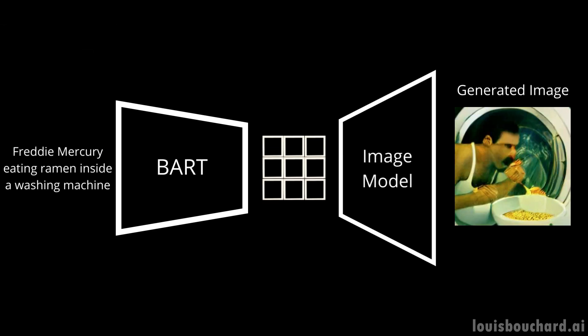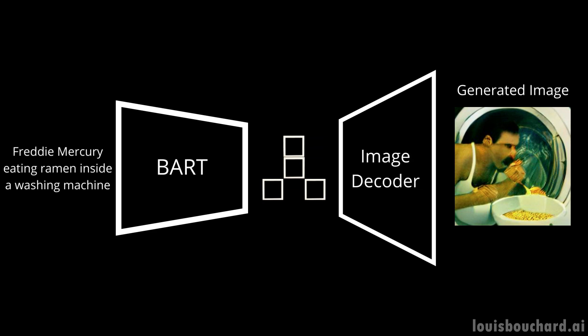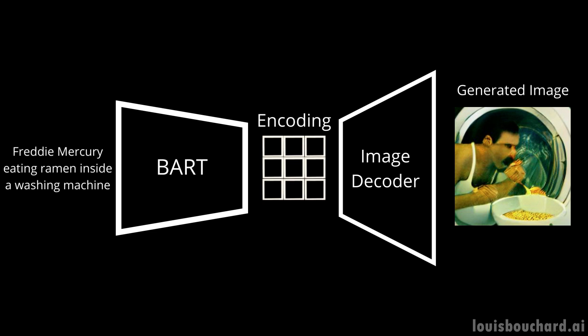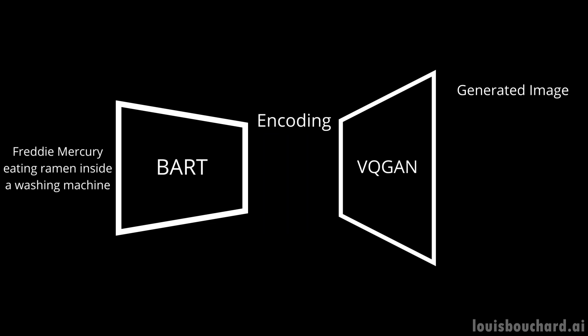But then, what is this thing here that generates the image? We call this a decoder. It will take the new caption representation produced by BART, which we call an encoding, and will decode it into an image. In this case, the image decoder is VQGAN, a model I already covered on the channel, so I definitely invite you to watch that video if you're interested. In short, VQGAN is a great architecture to do the opposite — it learns how to go from such an encoding mapping and generate an image out of it.